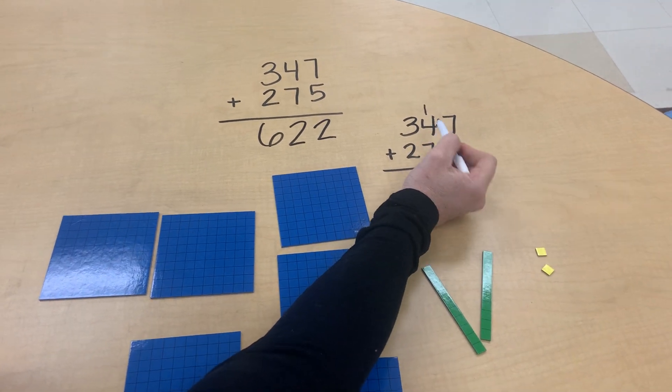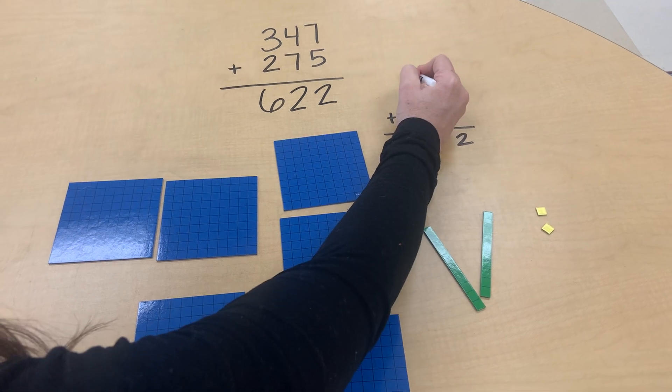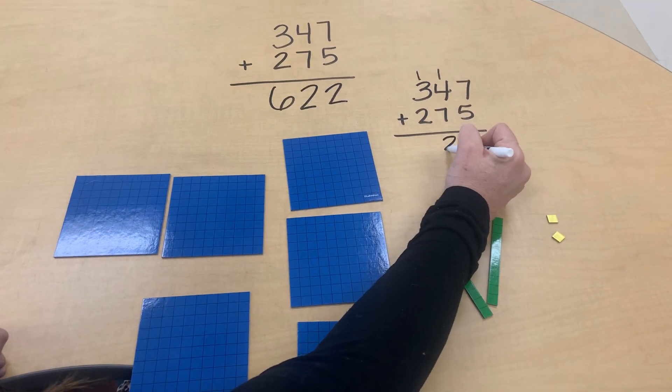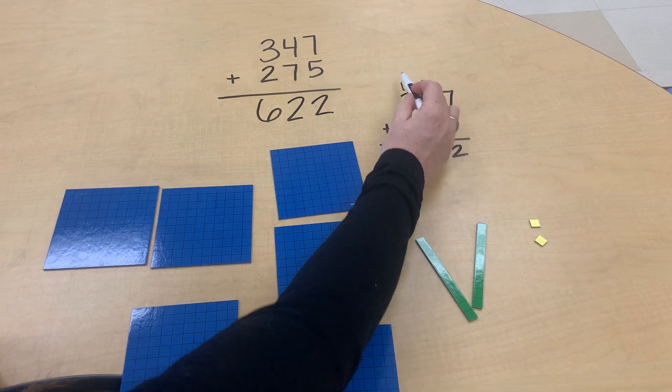We will regroup our ten and put our ones in the ones place. Seven plus four is eleven and one more is twelve. So we regroup our hundred and put our two tens there.